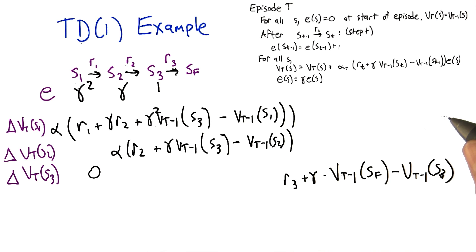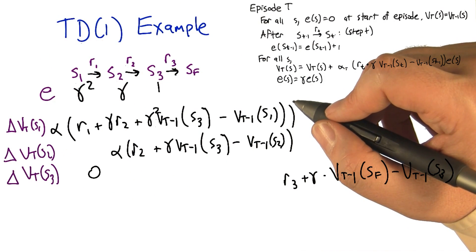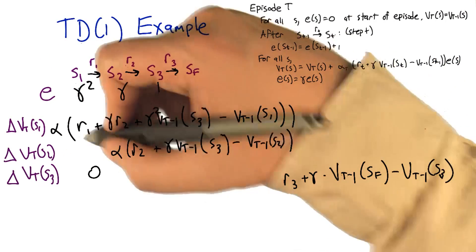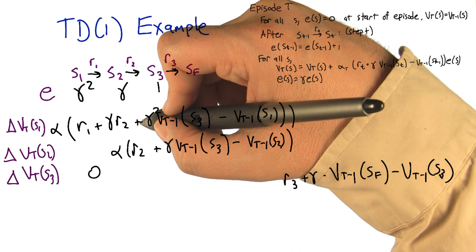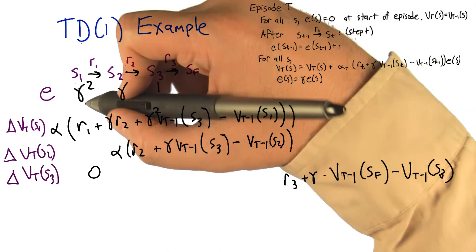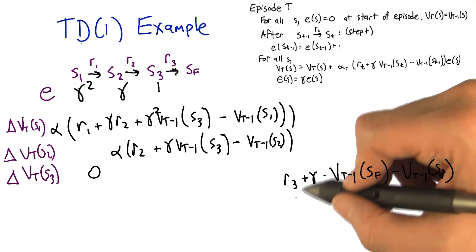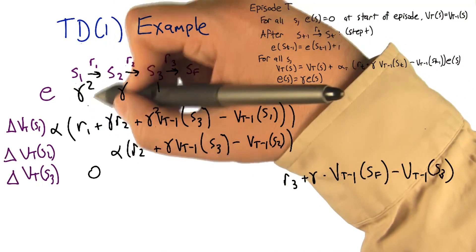So tell me if I'm right. The delta for vt of s1 is basically going to have seen one more thing. So it'll end up being r1 plus gamma r2 plus gamma squared r3. And where does that come from? Well that comes from the term that you just added over there, the r3 and the eligibility for state s1.